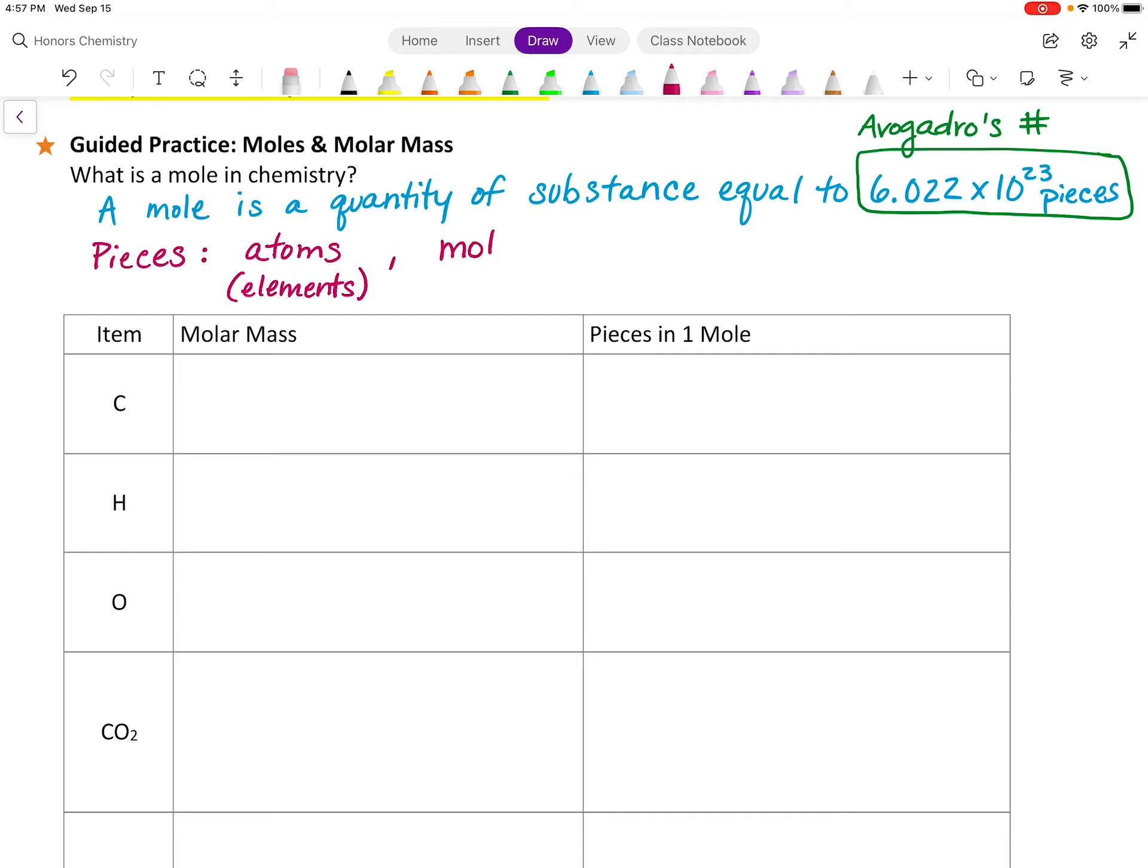They could be molecules for what we would call covalent compounds or covalently bonded, which we will work on a little bit later. Or we could have formula units, and formula units are going to be for ionically bonded substances, so ionic compounds. We will come back later and do a little more work with those different types of compounds. If you're ever not sure, you can always just use pieces to demonstrate that.